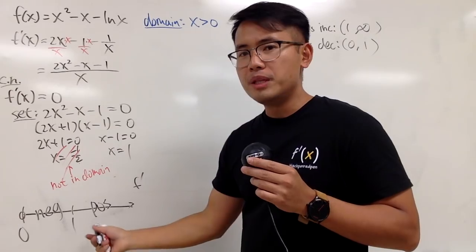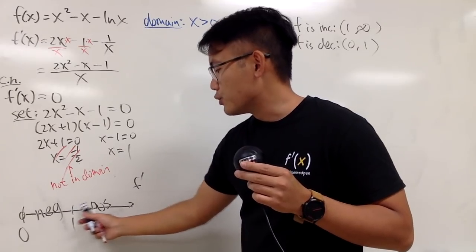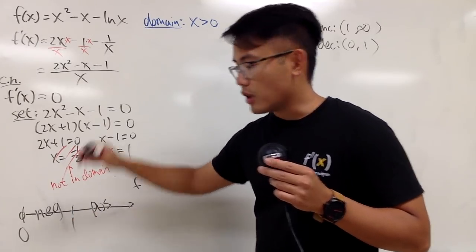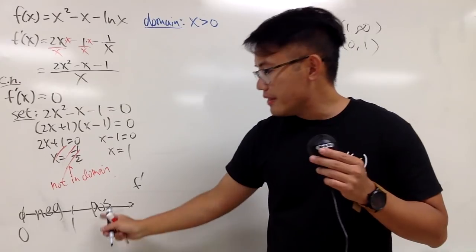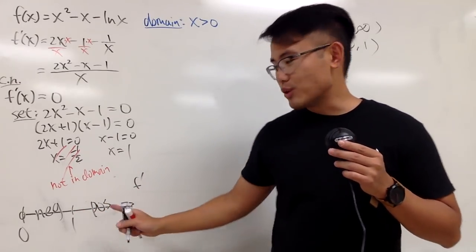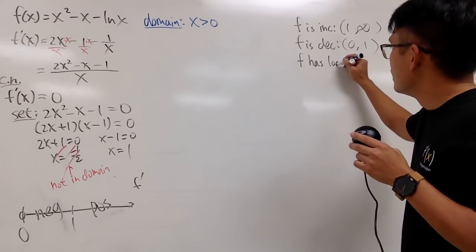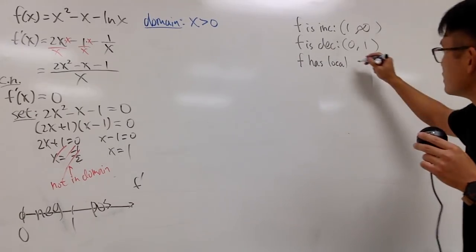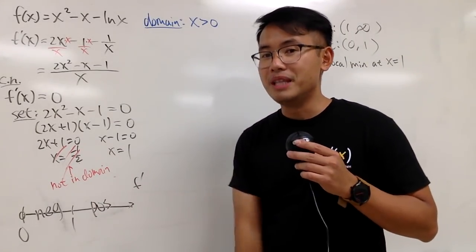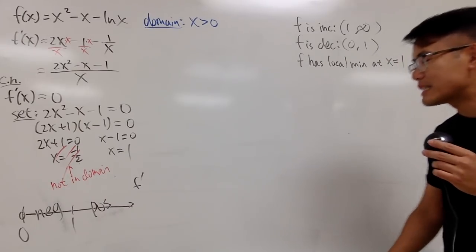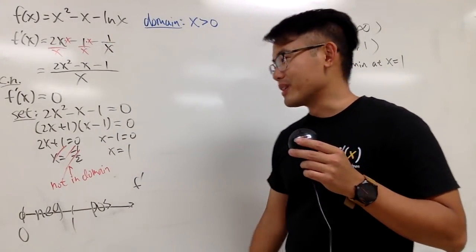At x = 1, the first derivative changes from negative to positive, meaning the function goes from decreasing to increasing. Therefore, f has a local minimum at x = 1. There is no local maximum. These are all the conclusions from the first derivative.